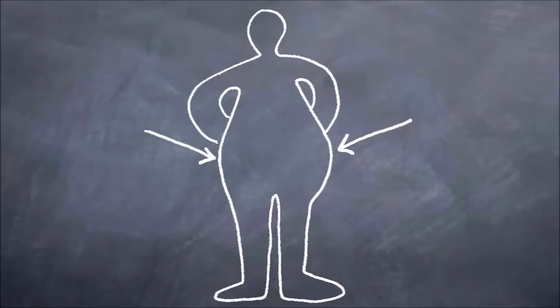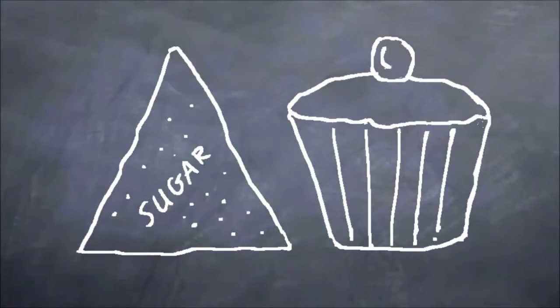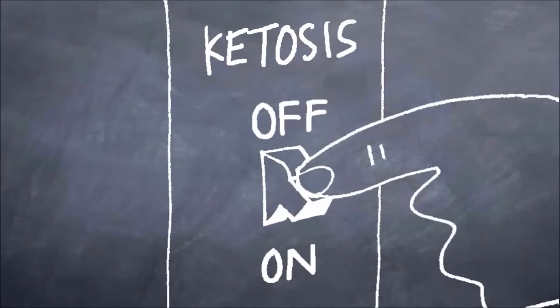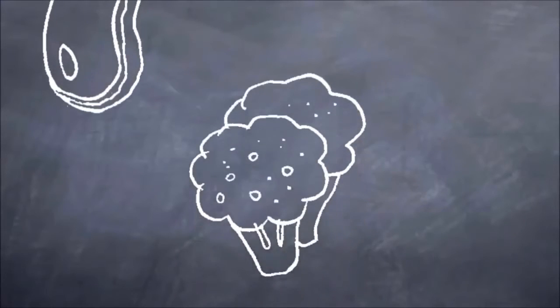The ketosis process is the body using fat rather than sugar and starches as energy, and it's easily triggered by cutting out starch and sugar from our diet and switching to a balanced diet of protein and vegetables.